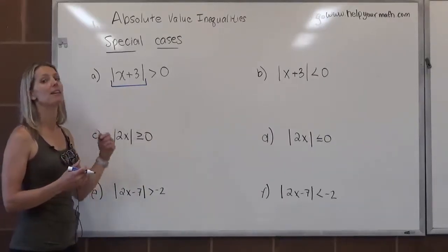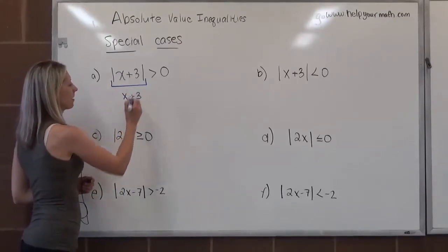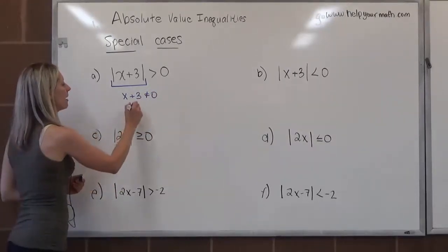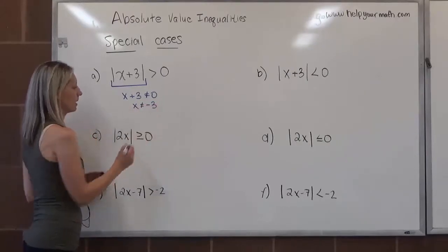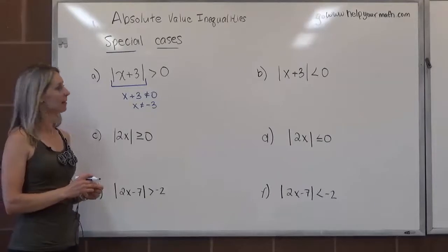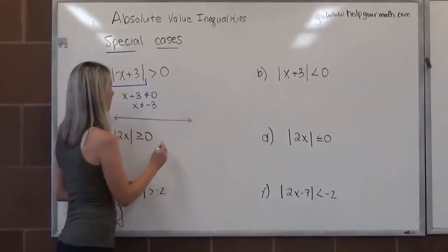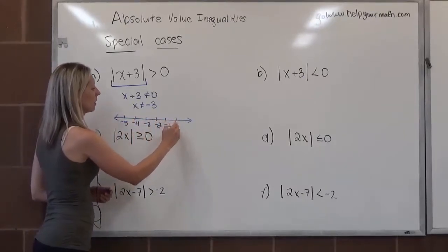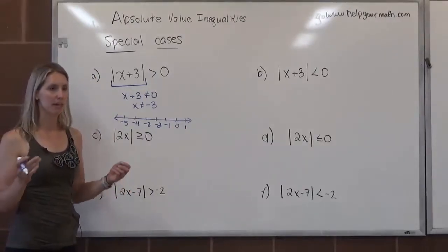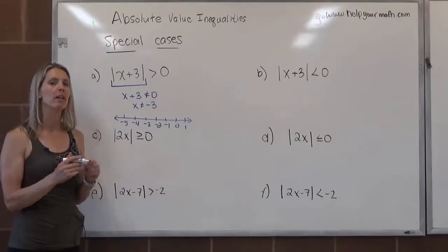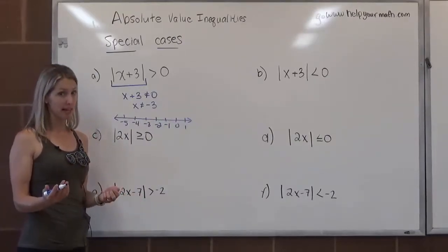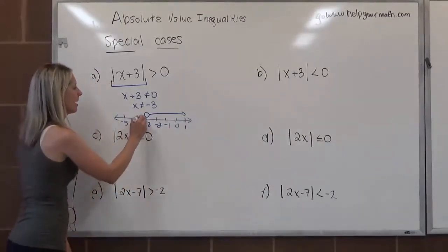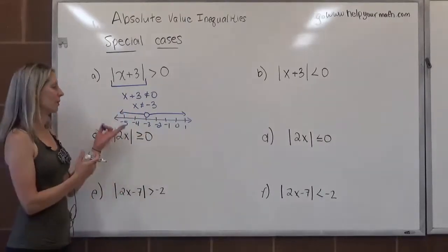That would be when this thing is equal to 0. So we say x plus 3 cannot equal 0, which means x cannot be negative 3. So x can be any number except negative 3. On a number line, this is going to look really silly — we're going to have negative 5, negative 4, negative 3, negative 2, negative 1, 0, and 1. We use an open circle over negative 3, but everything to the right and to the left of it is a solution — it's like taking a number line and just plucking out that single point.